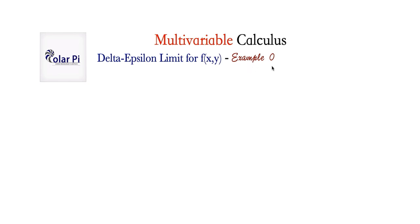Hey guys, welcome. So in example 0, on a corresponding video in Calculus 2, we first introduced the delta epsilon limit definition, but therefore a function of a single variable, f of x.